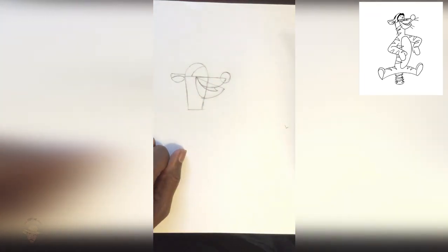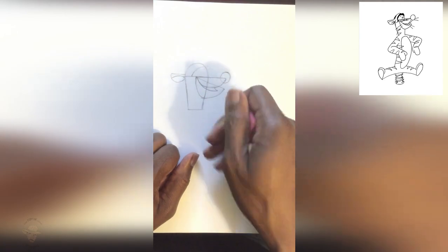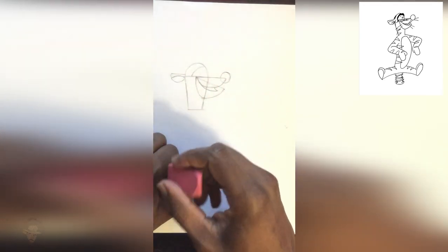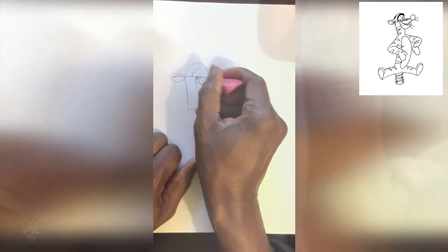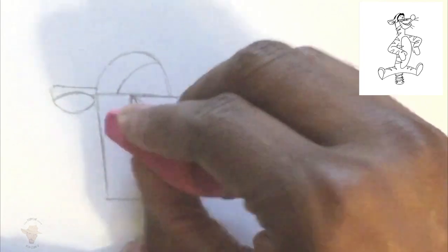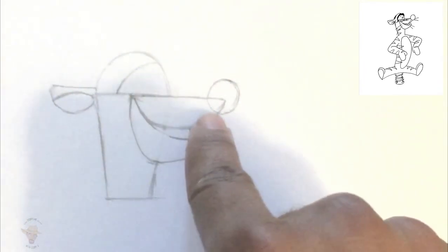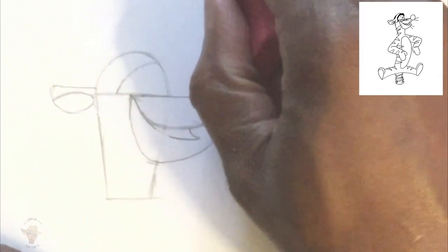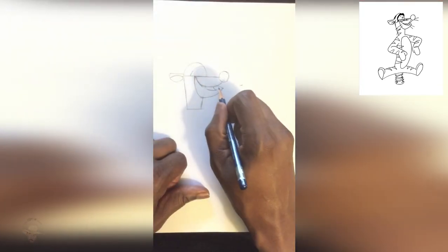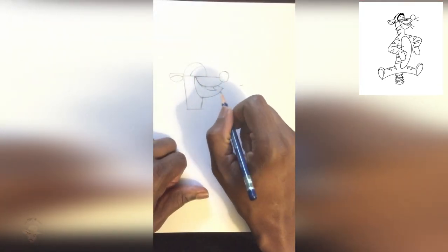And now you've got his mouth. And now we can start erasing a few things. Like everything in the side, this letter D. And this line inside of this curve, and inside the mouth. And you can even get inside that circle here for his nose. Now you can see his familiar face start to take shape.